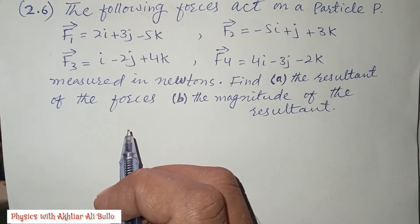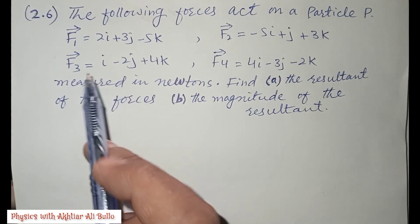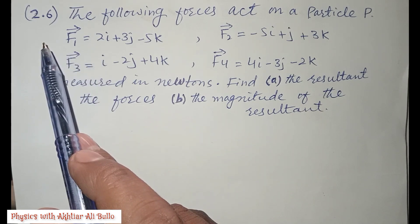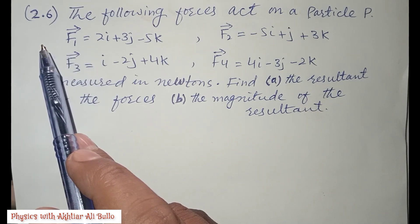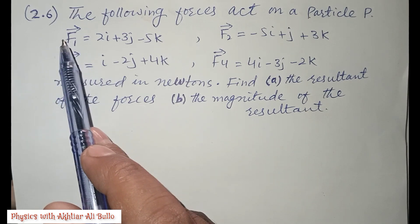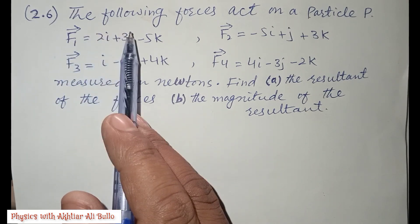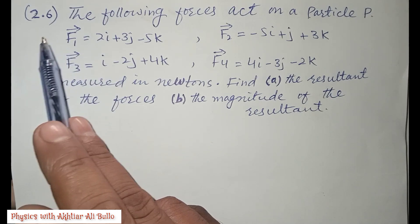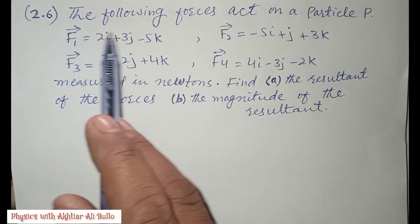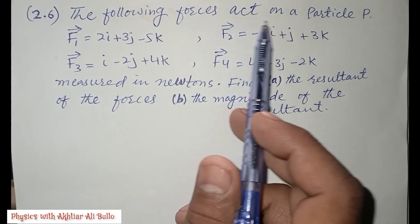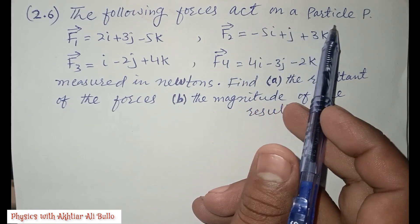Hello friends, Assalamu Alaikum. Today we are going to solve the numericals of first-year physics, chapter number two: Vectors. The numerical number 2.6 is: the following forces act on a particle P.